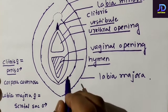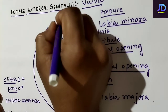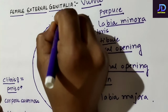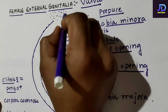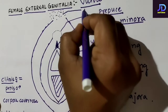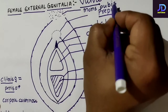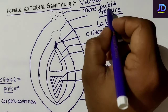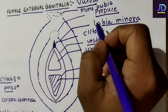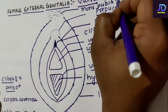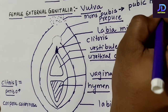On the top of the labia majora there is a cushion of soft fatty tissue, and this cushion of fatty tissue is known as mons pubis. The mons pubis region is very soft because of the fatty tissue, and generally the mons pubis region is covered by pubic hair.